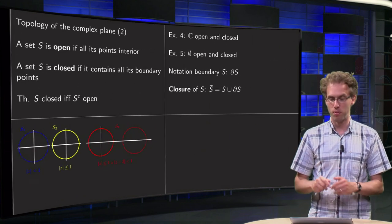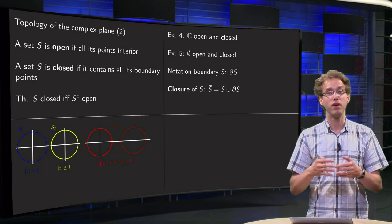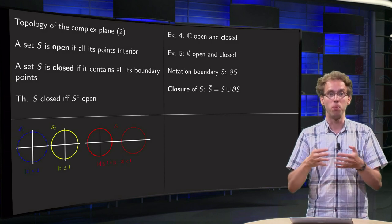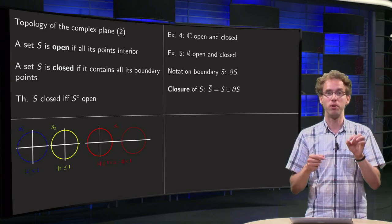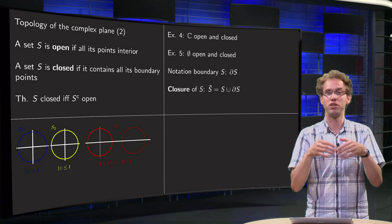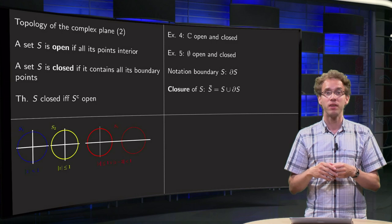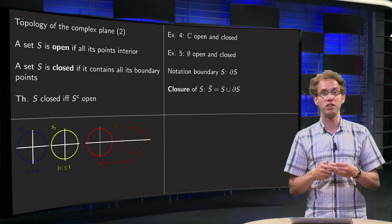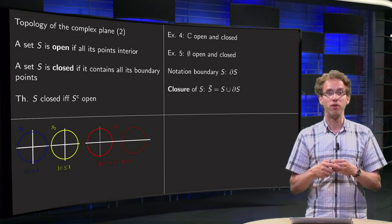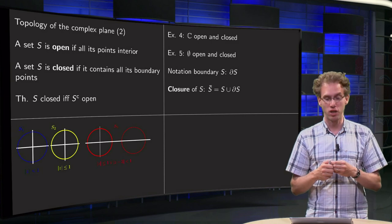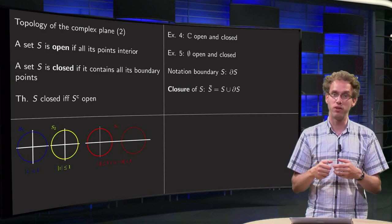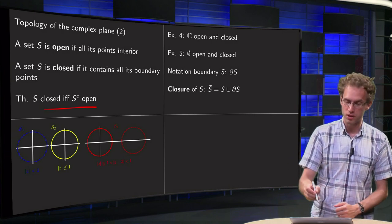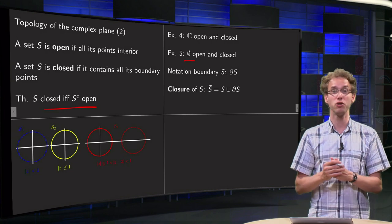Can we have sets which are both open and closed? Yes, we can — for example the full complex plane, maybe a bit silly, but still: all points are interior points because all points belong to C, so no matter how big you make a circle around any point, it is still contained in the full set. And it is also closed because it has no boundary points at all. So in particular all boundary points are incorporated, or you can use the theorem that S is closed if and only if its complement is open. Also, the empty set is both open and closed.